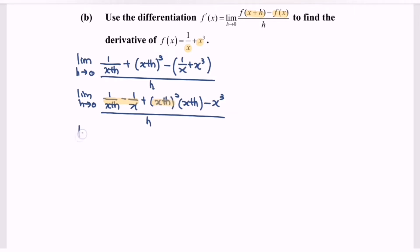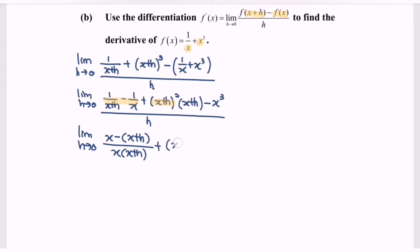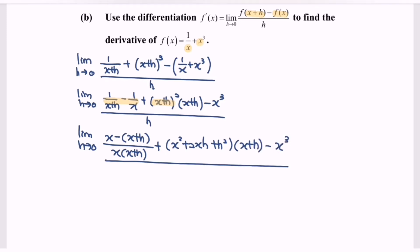Limit as h approaches zero, where we have x minus (x plus h) over x multiplied by (x plus h), plus x squared plus 2xh plus h squared, multiplied by (x plus h) minus x to the power of 3, over h.